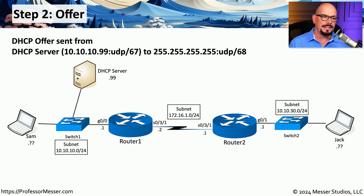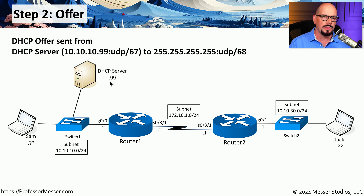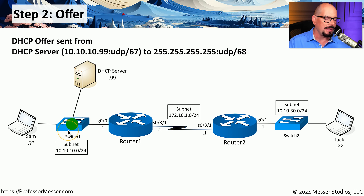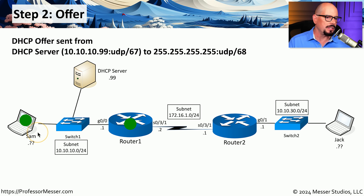One of the devices that received that Discover message is the DHCP server on this network, which has an IP address of 10.10.10.99. This server now sends a DHCP Offer to Sam's workstation using a broadcast — because Sam does not yet have an IP address — so this step two Offer is sent from the DHCP server to an all-ones broadcast of 255.255.255.255. As a broadcast, it's sent to all of the devices on this local subnet, and Sam receives this broadcast, which contains an offer of an IP address that could be configured for her machine.